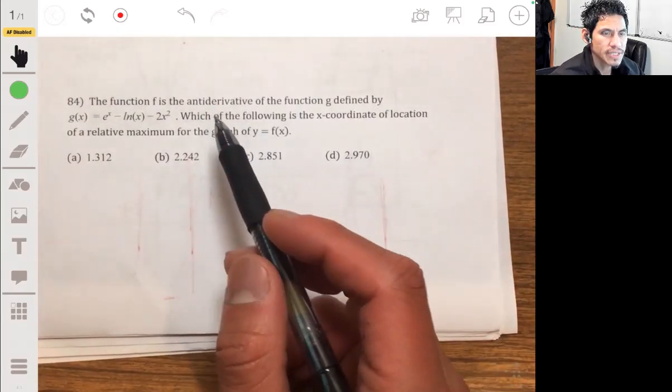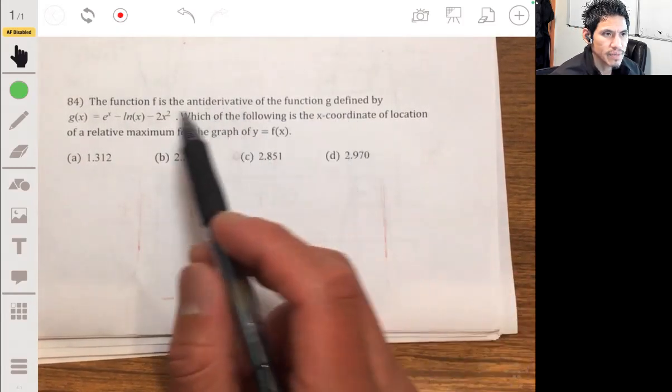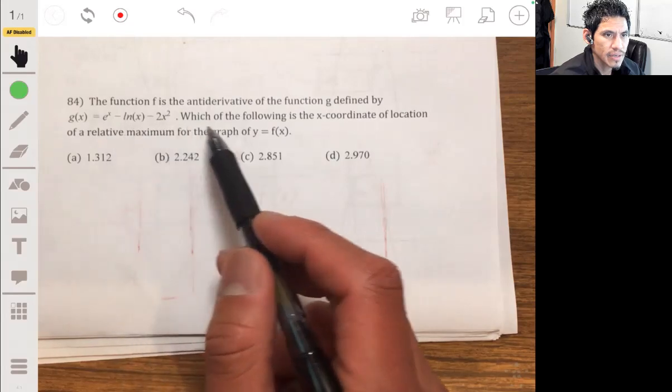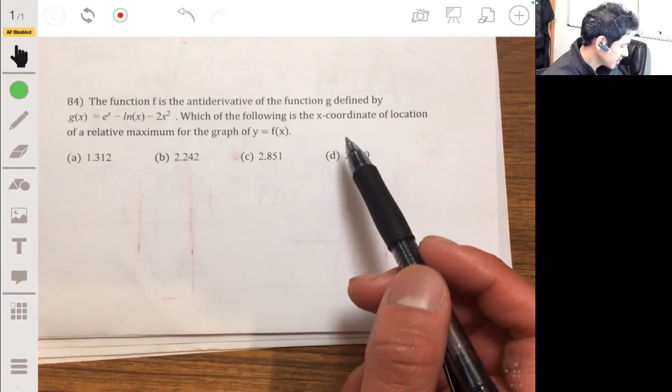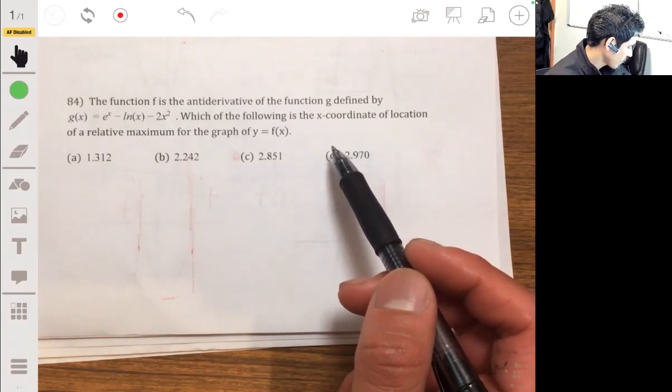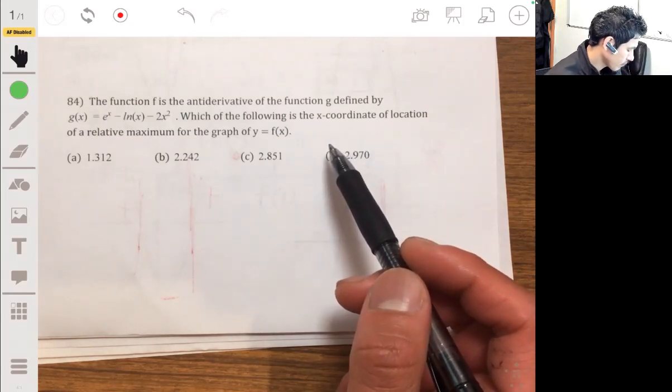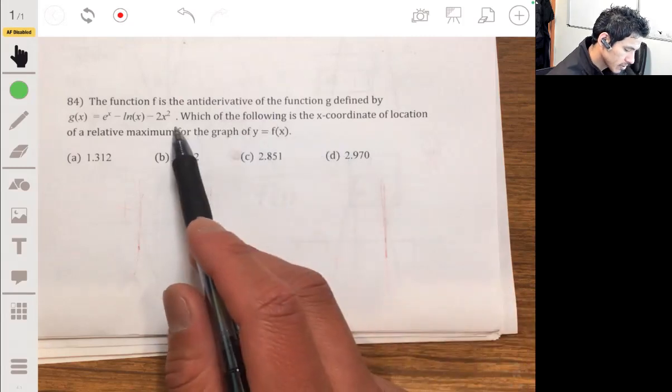Alright, problem 84. So the function f is the antiderivative of the function g defined by this guy. Which is the following as the x-coordinate of the location of a relative maximum for this graph?